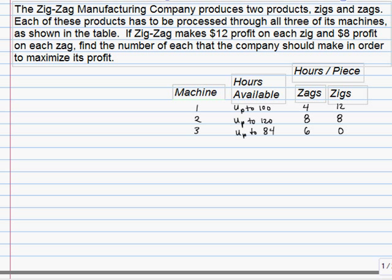Here we're just going to set up a linear programming problem from the word problem. Some key things to look for: we know a linear programming problem is going to have a maximization or a minimization of the objective, and also a set of linear constraints, and also watch out for the non-negativity constraints. Since the linear programming problem starts with the objective, let's look for the word maximize or minimize in this word problem — we'll usually find it at the end.